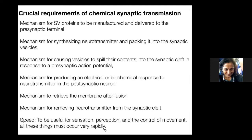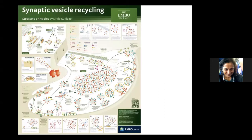Speed is of real essence — communicating sensation, perception, and control of movement all need to happen really rapidly. Vesicle recycling itself involves: generation of synaptic vesicle proteins in the rough ER; sorting in the Golgi apparatus; budding from the trans-Golgi; transport to the synapse; clathrin importing for vesicle structural integrity; filling with neurotransmitter; docking at the active zone; priming; and then fusion when an action potential comes in, allowing calcium entry.